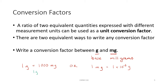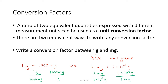For an example, we want to write a conversion factor between grams, our base unit, and milligrams. Looking at our chart there are two different ways we could write this. We could say that one gram is equal to one thousand milligrams, or we could say that one milligram is equal to one times ten to the negative third grams, or 0.001 grams. Either of these would be appropriate conversion factors. Both of them can also be written as a fraction for when we do dimensional analysis.